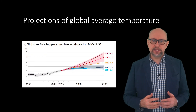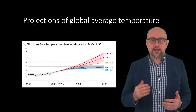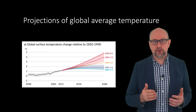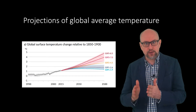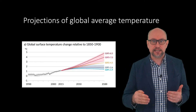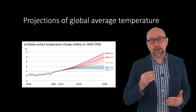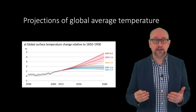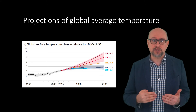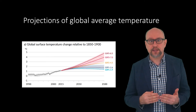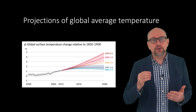What did these scenarios predict for temperature? This figure shows the temperature change relative to the 1850 to 1900 baseline. The very likely ranges are shown for the SSP1 2.6 and SSP3 7.0 scenarios. Compared to 1850–1900, global surface temperature averaged over 2081 to 2100 is very likely to be higher by 1.0 to 1.8 degrees Celsius under the very low greenhouse gas emission scenario (SSP1 1.9), by 2.1 to 3.5 degrees Celsius in the intermediate scenario (SSP2 4.5), and by 3.3 to 5.7 degrees Celsius under the very high greenhouse gas emission scenario (SSP5 8.5). The last time global surface temperature was sustained at or above 2.5 degrees Celsius higher than the 1850 to 1900 baseline was over 3 million years ago.